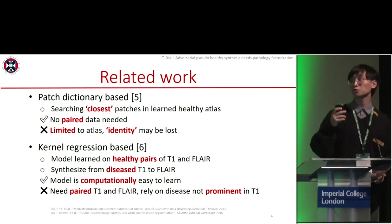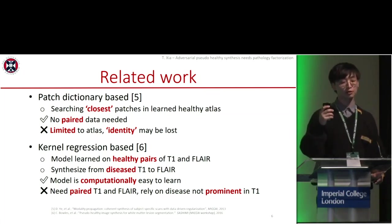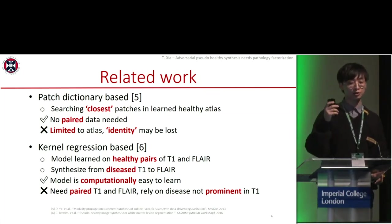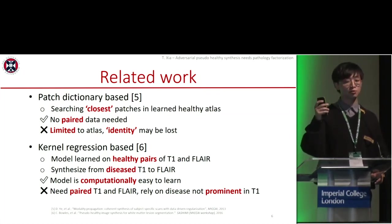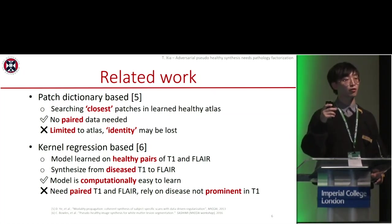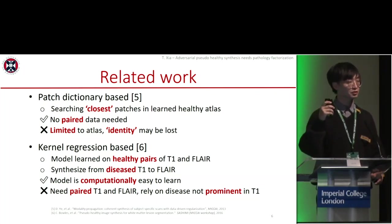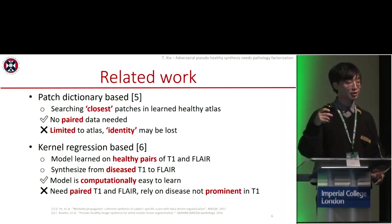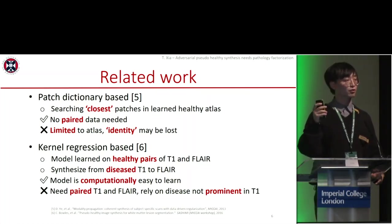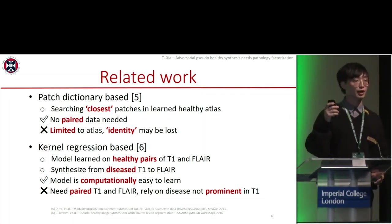So how do other researchers overcome these challenges? Before deep learning, some researchers used patch dictionary-based methods. The idea is to create a healthy atlas from healthy subjects only. When given pathological images, they search for the closest patch within this healthy atlas and use the patch to construct the pseudo-healthy images. So it doesn't need paired data. However, this method is limited to the atlas, and since we are using patches from other subjects, the identity may be lost.